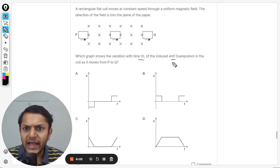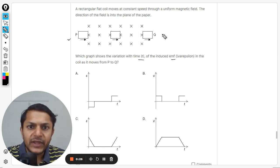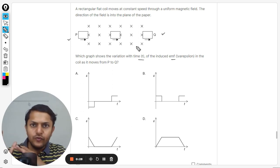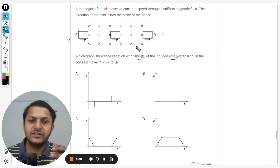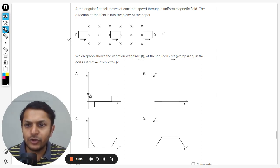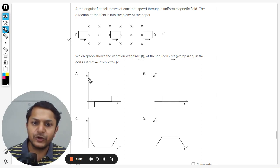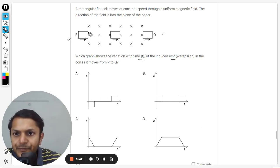In the coil as it moves from P to Q. Okay, so there is this coil and this coil is trying to move through an area where there is a magnetic field which is existing into the page and it is going like this. So we have to comment on the EMF that is produced.